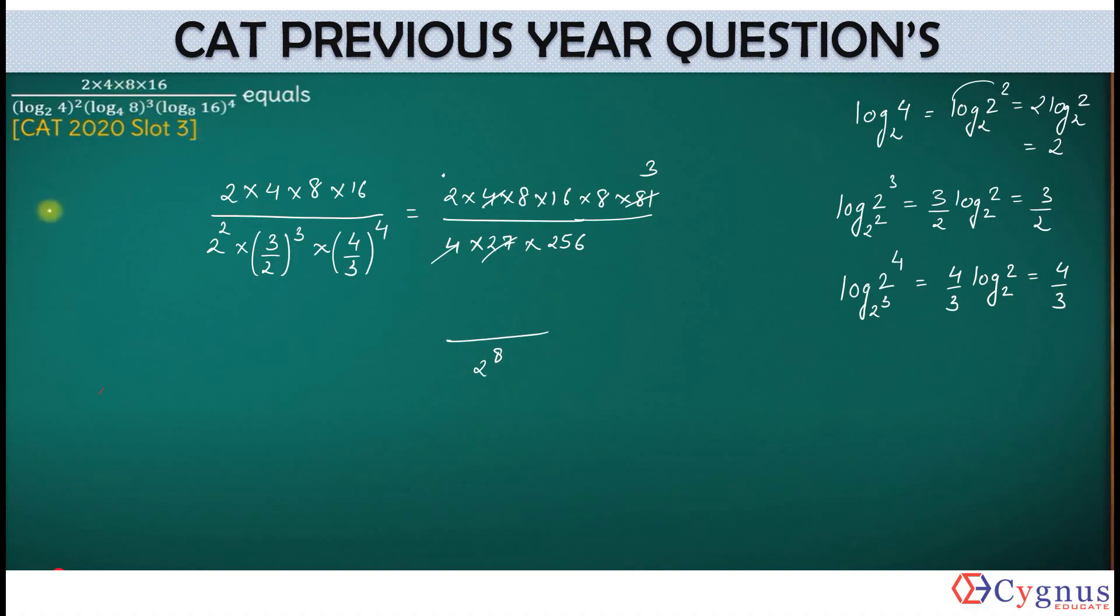How many 2's are there in the numerator? This will give you 1. This will give you 3. This will give you 4. And this will give you 3. 3 plus 4 plus 3 will give you how much? It is 10. And this 1 also, 11. We have 2 to the power 11 here.